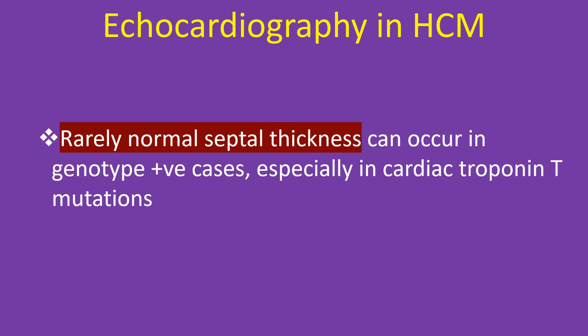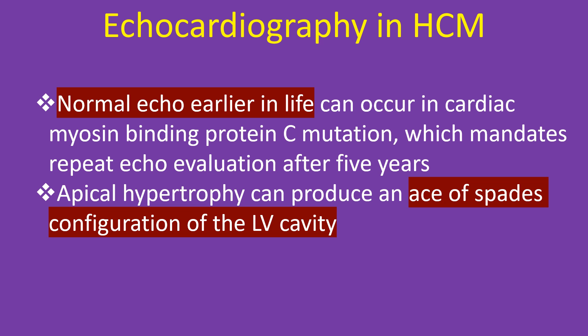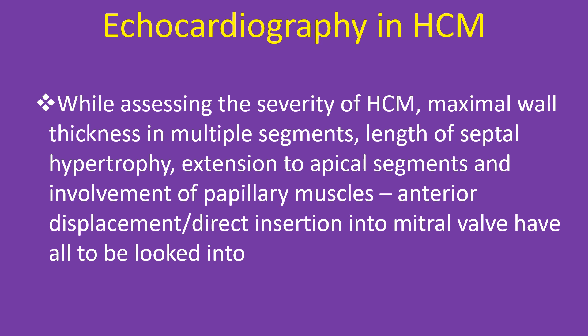Rarely, normal septal thickness can occur in genotype-positive cases, especially in cardiac troponin T mutations. Normal echo earlier in life can occur in cardiac myosin binding protein C mutation, mandating repeat echo evaluation after 5 years. Apical hypertrophy can produce an ace-of-spades configuration of the left ventricular cavity. When assessing severity, maximal wall thickness in multiple segments, length of septal hypertrophy, extension to apical segments, involvement of papillary muscles, anterior displacement, or direct insertion into the mitral valve must all be evaluated.